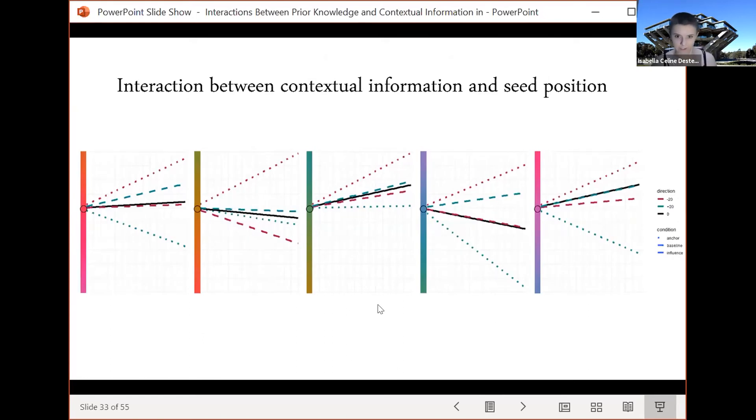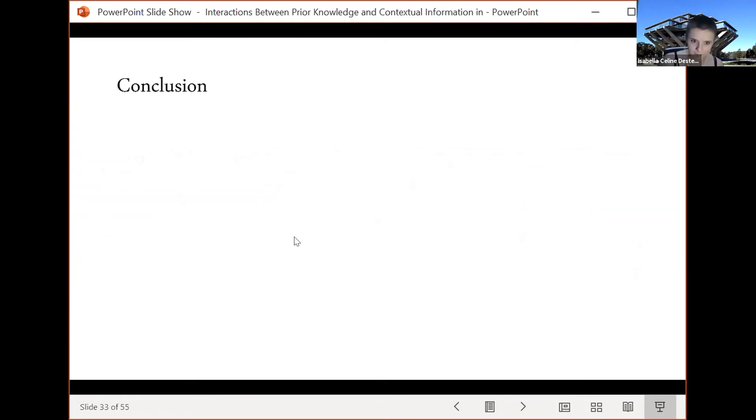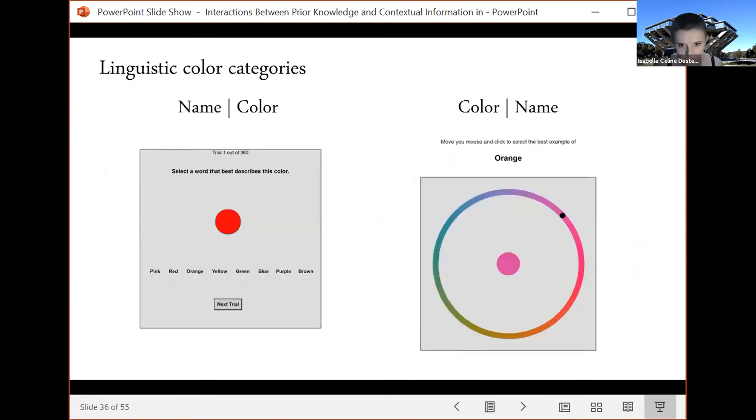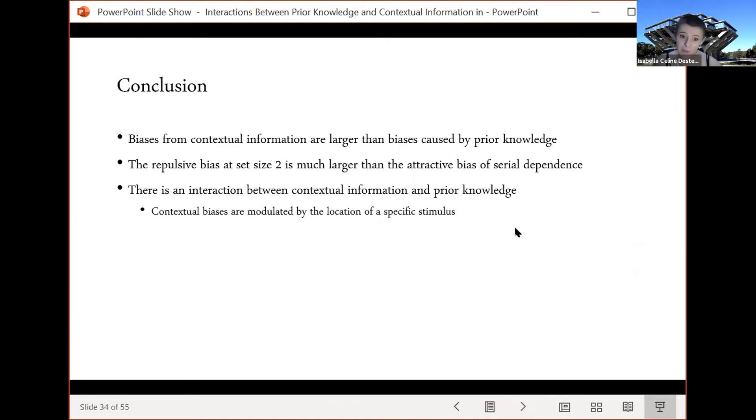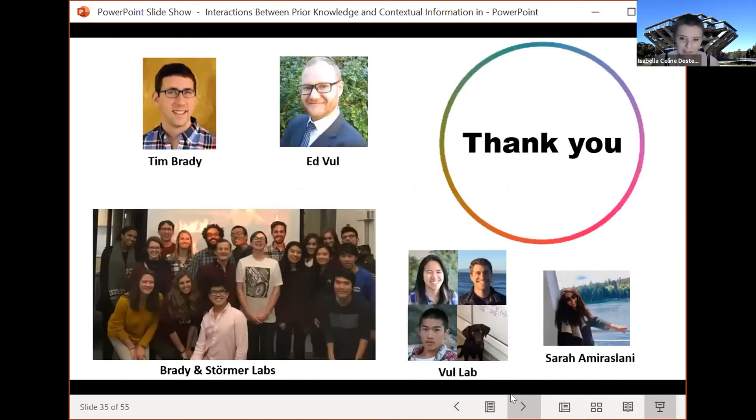So in conclusion, biases from contextual information are larger than biases caused by prior knowledge. The repulsive biases at set size 2 is much larger than the attractive bias of serial dependence and there is an interaction between contextual information and prior knowledge such that contextual biases are modulated by the location of a specific stimulus. Hopefully I've convinced you that even though we think we understand memory, even the most boring memory tasks are incredibly complicated. Thank you for your attention that's all I have and thank you to my advisors and my lab.